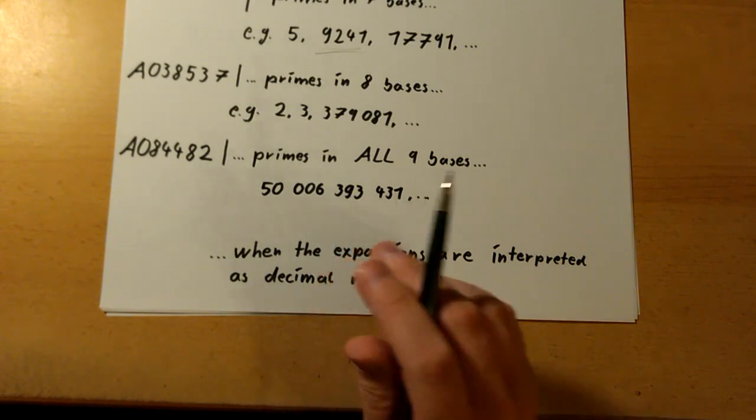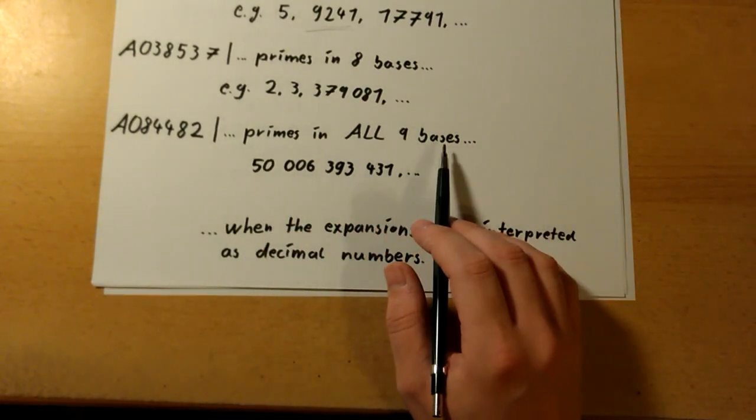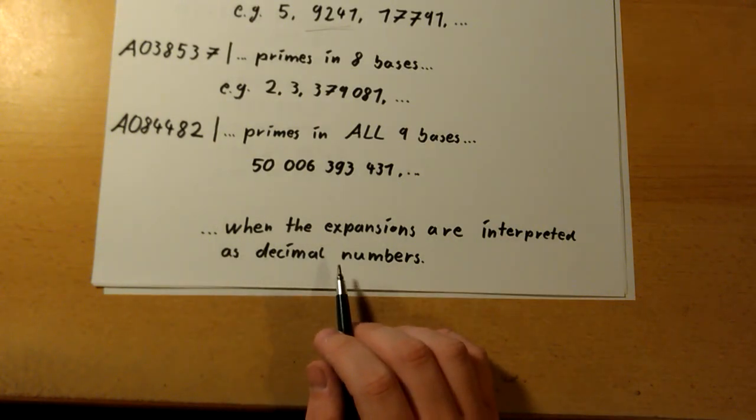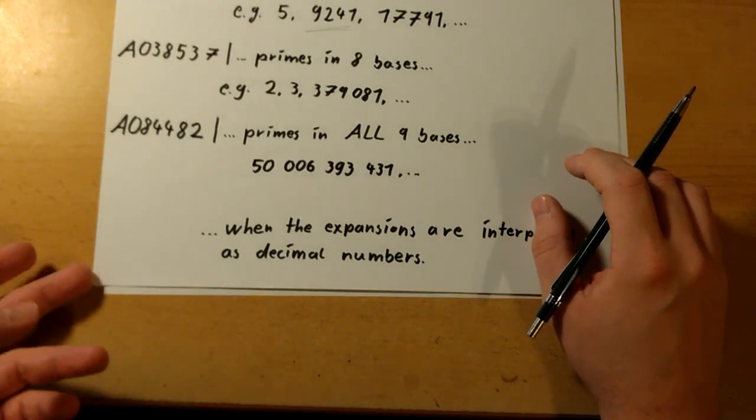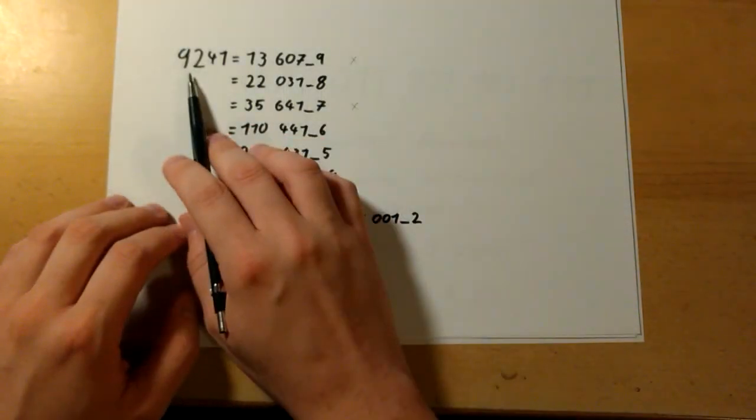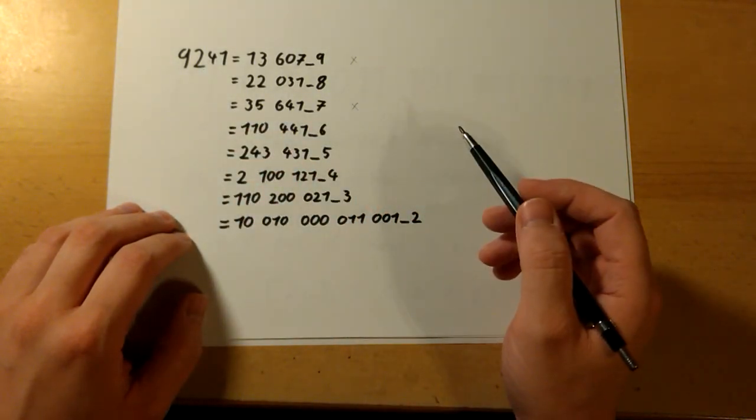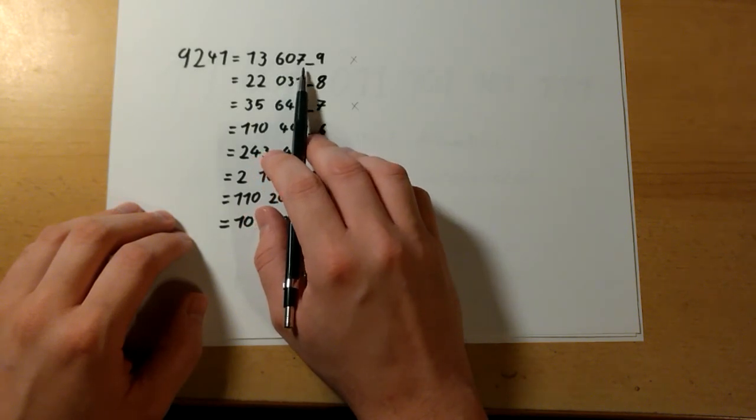But wait a second—primes in all nine bases when the expansions are interpreted as a decimal number. That is not what I wanted, right? Let me explain. If you want to reach this value in different bases, we have to write different numbers.